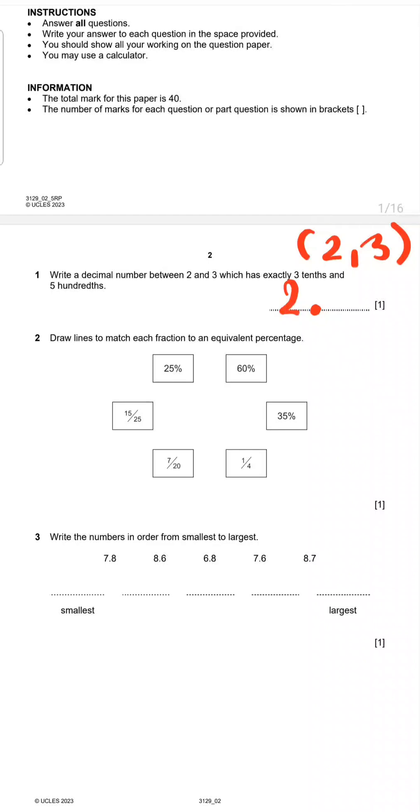So what about the decimal numbers? The decimal place? 3 is tenths. So after a decimal point, the first place is tenths. Second place is hundredths. So here tenths is 3 and hundredths is 5. So the number is 2.35.